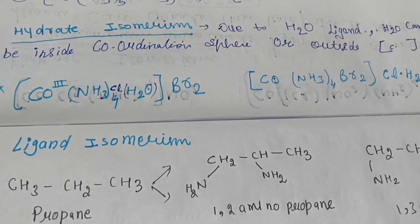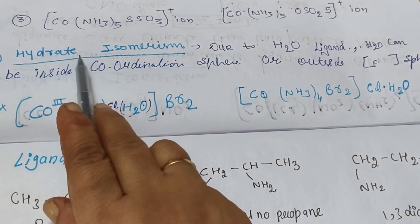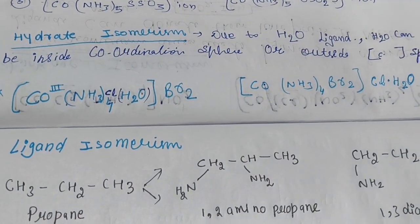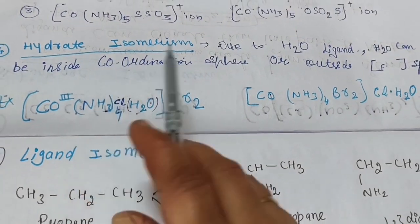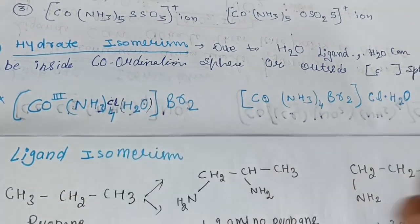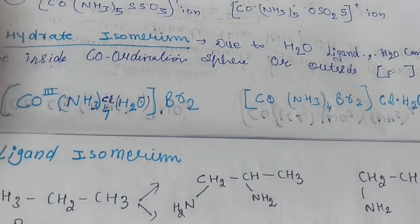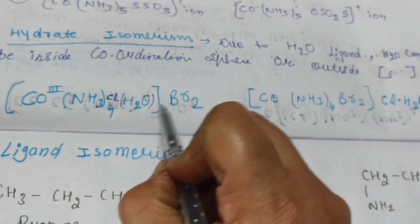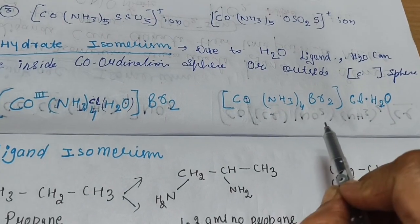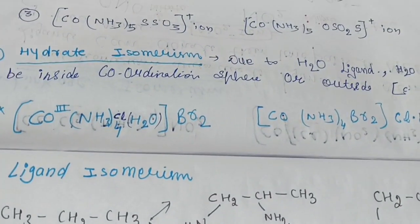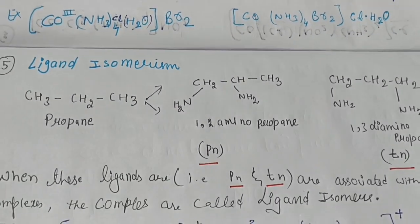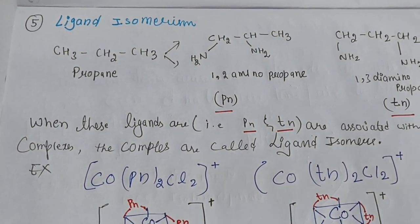Hydrate isomerism is straightforward — the name tells us it involves water. Isomerism occurs because H₂O can be either inside the coordination sphere as a ligand or outside in the ionization sphere. This is part of solvate isomerism. Both water molecules can also come outside the coordination sphere.